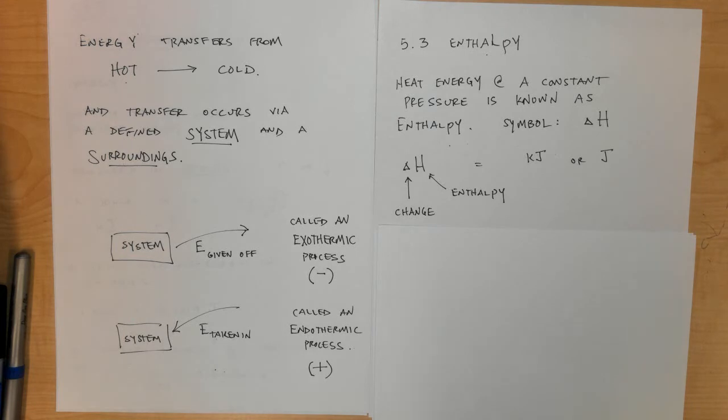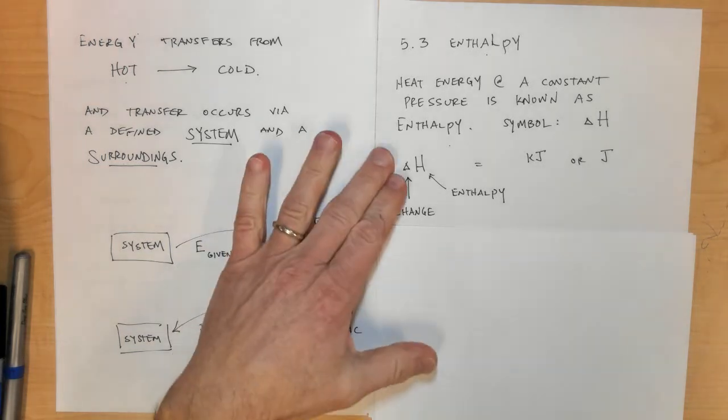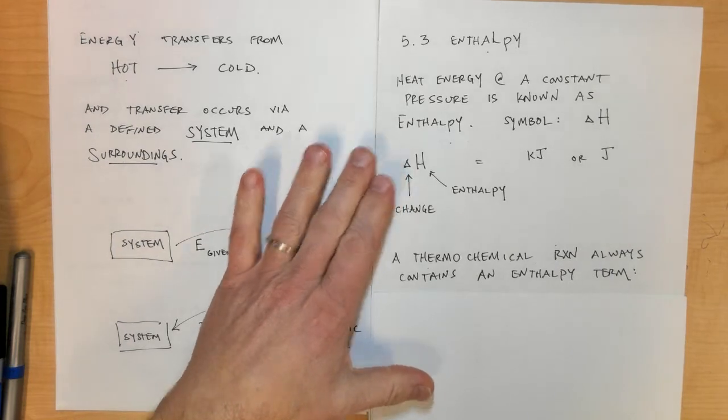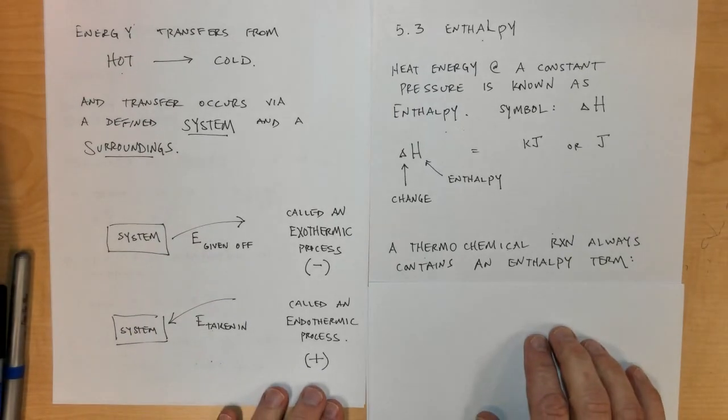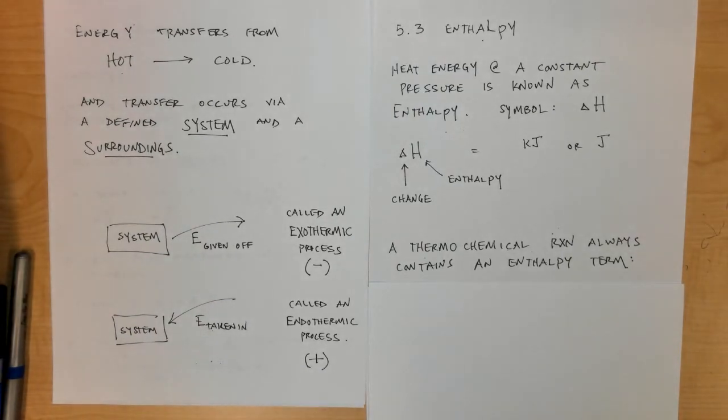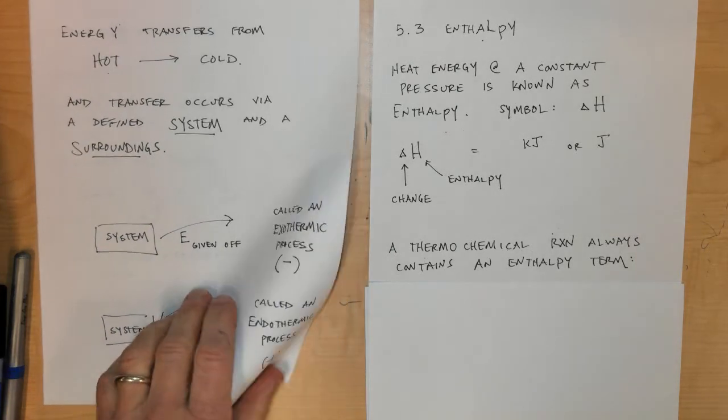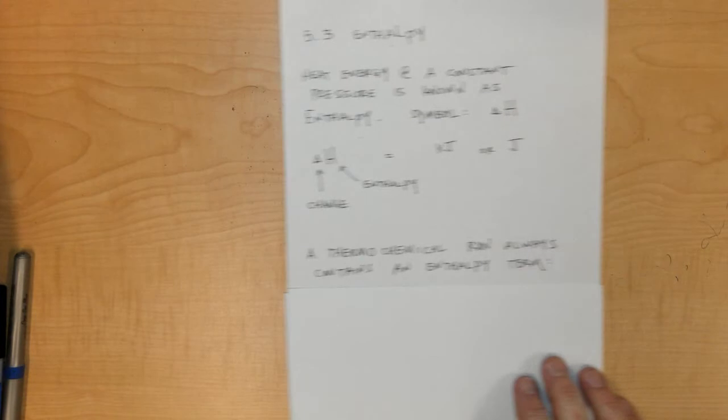In chemistry we almost always look at heat as the type of energy we use, although there are a few others including mechanical and electrostatic. In this chapter we're going to look almost exclusively at the change or exchange of heat energy.